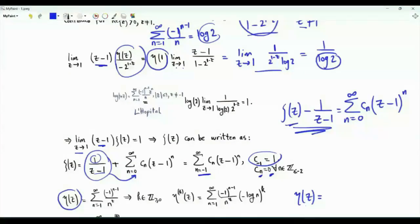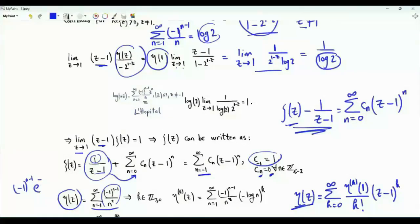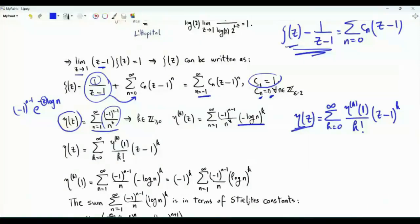The series expansion of eta of z is summation k from 0 to infinity of the k-th derivative of eta evaluated at 1, divided by k factorial, times z minus 1 to the power k. If k equals 0, that's the function eta itself; if k is a positive integer, that's the k-th derivative obtained via term-by-term differentiation. The summand is minus 1 to the n minus 1 times e to the power minus z log n. Differentiating with respect to z k times gives the factor minus log n raised to the power k. So the k-th derivative evaluated at 1 is summation n from 1 to infinity of minus 1 to the n minus 1 over n, times log n to the power k.